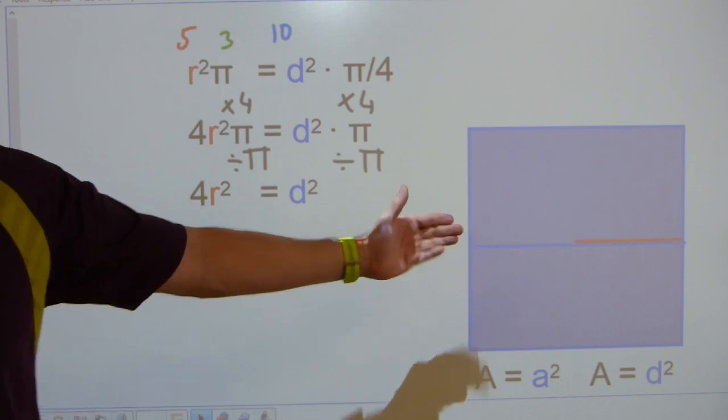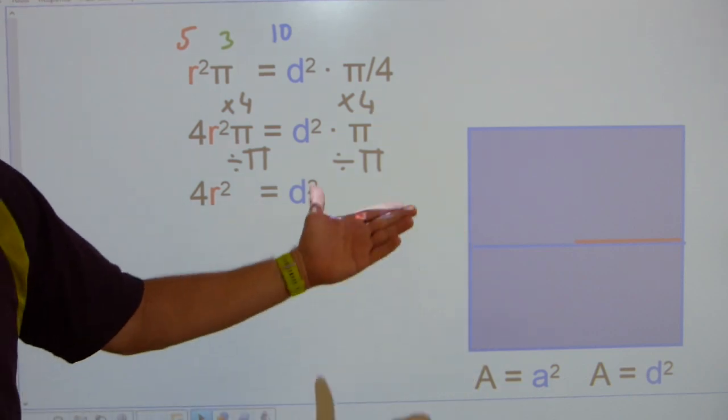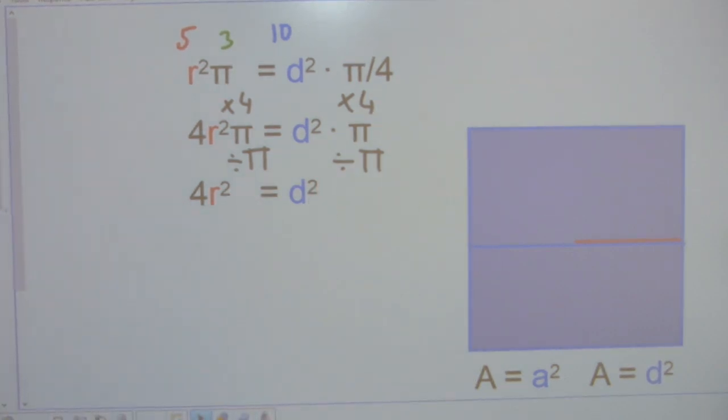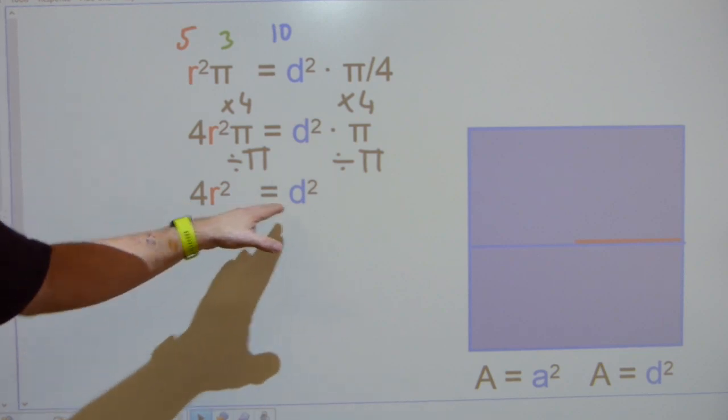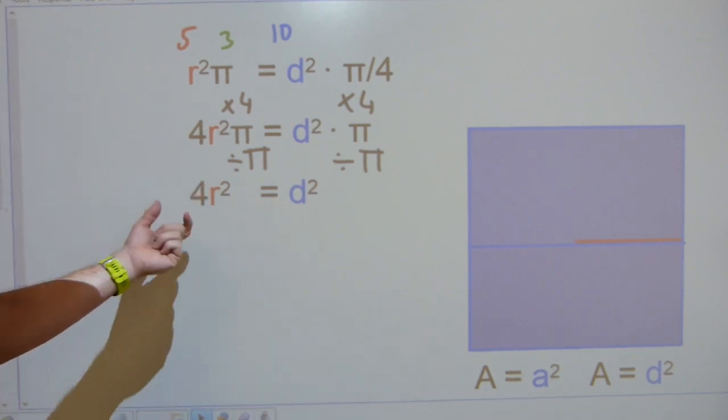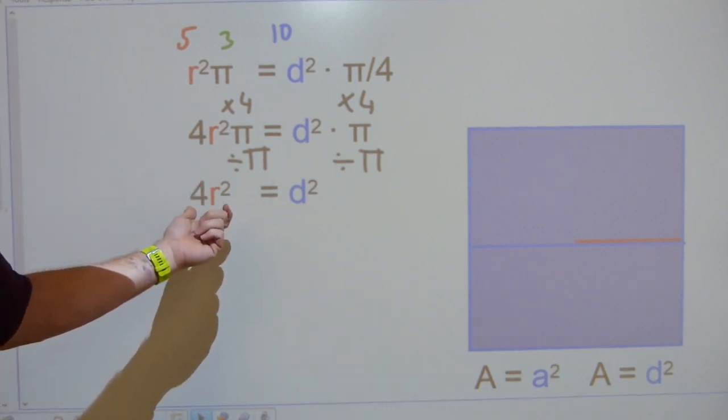You see the red line in it? That's its radius. The blue line here is the original diameter, or side length, of the square.